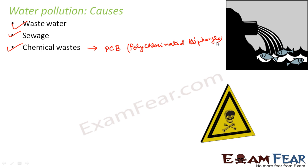Not only PCBs, but chemicals like lead, mercury, or cadmium — when disposed of in water — also make it extremely poisonous. Lead might be present in petrol or diesel, while cadmium or mercury might be present in batteries. So there are different substances that could be sources of these harmful chemicals, and if those substances are directly disposed into water bodies, the water body will directly get polluted.